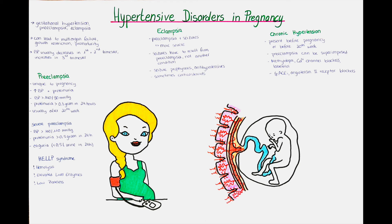To diagnose pre-eclampsia, we should make a complete blood count with special attention to the platelet count and lactate dehydrogenase, as well as the coagulation status. We can also make renal studies including serum blood urea nitrogen, creatinine and uric acid, and a 24-hour urine collection for protein and creatinine levels. The fetus should also be examined by Doppler sonography, where we can potentially see intrauterine growth restriction, oligohydramnios, and decreased placental blood flow.